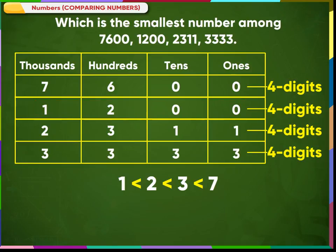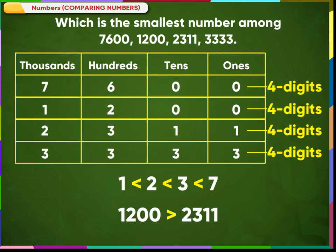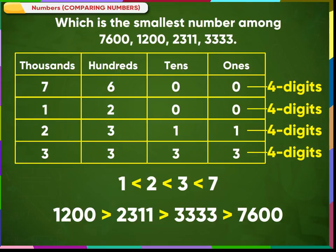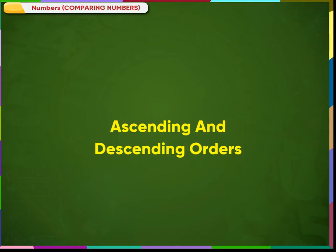Then it is 2311. The next number is 3333, and 7600 is the biggest number in this group. So, 1200 is smaller than 2311, which is smaller than 3333, which is smaller than 7600.